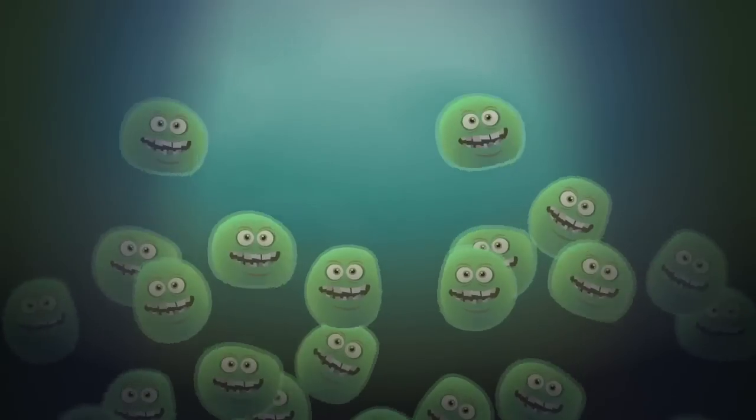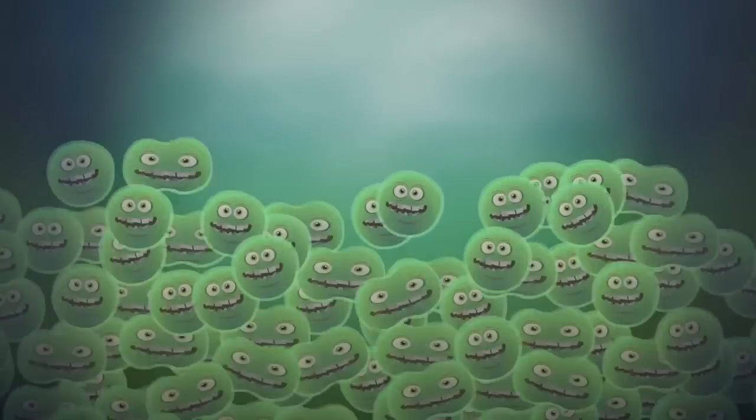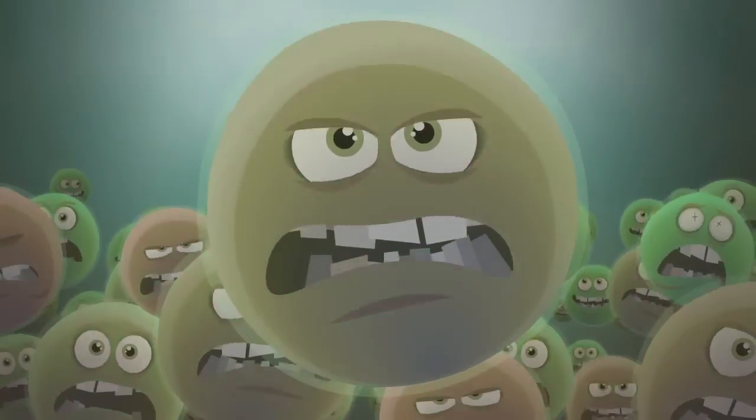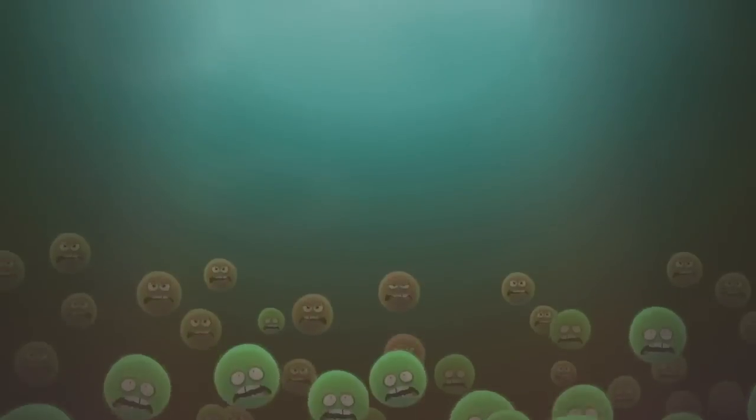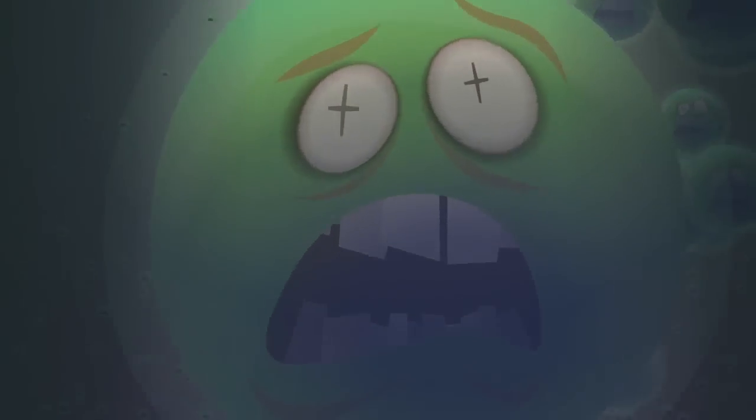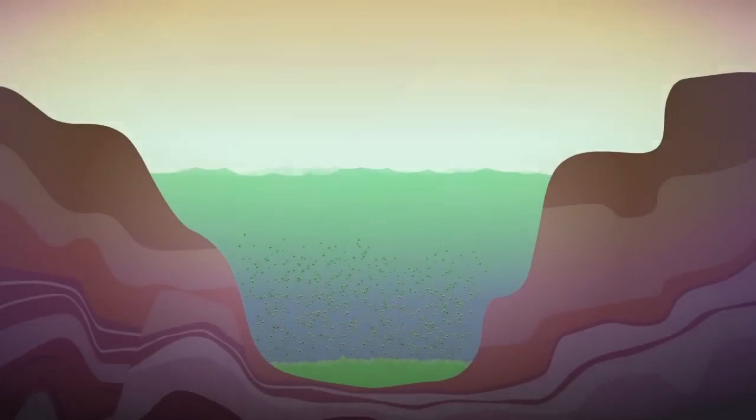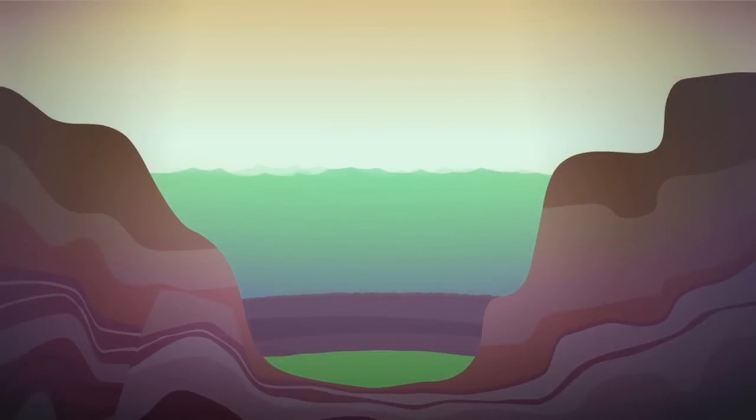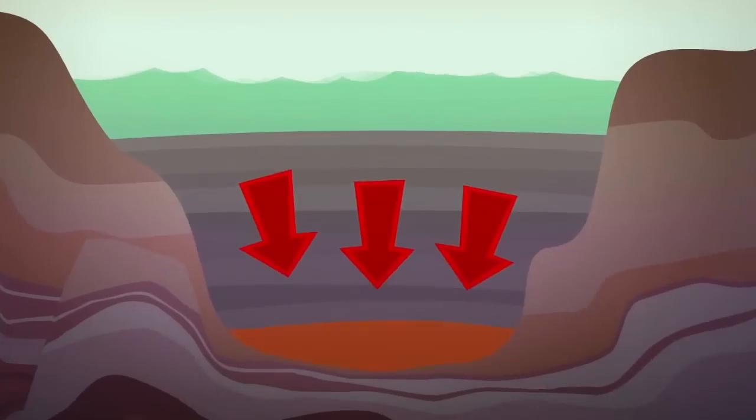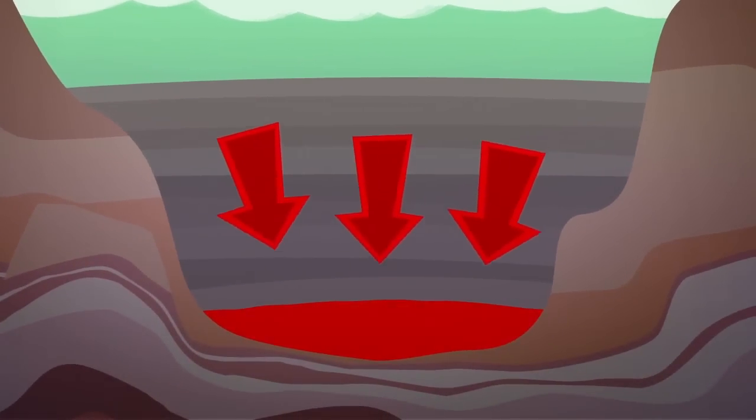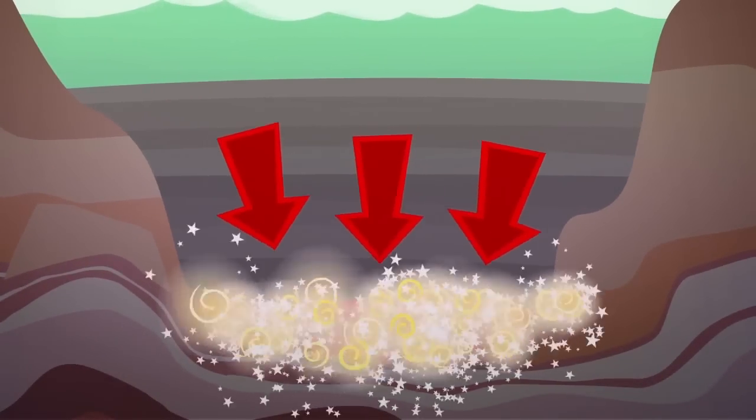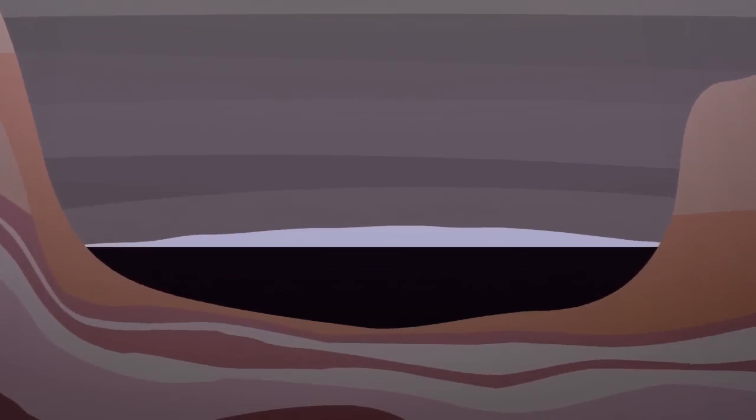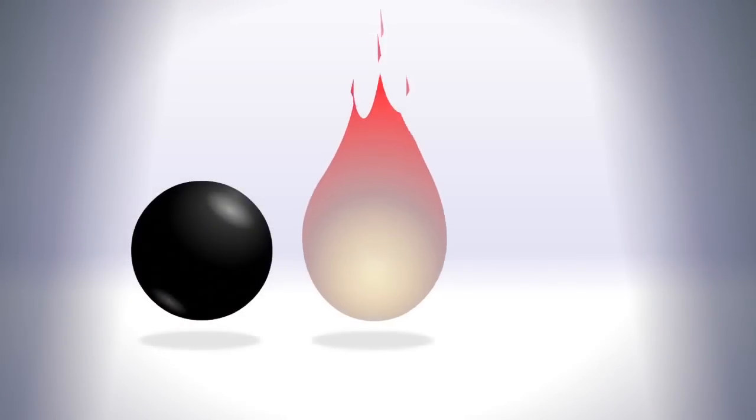Algae thrived in the extreme heat, poisoning the water. They died and fell in their trillions to the bottom of the rifts. Rivers washed sediment into the seas until the organic remains of the algae were buried. As the pressure grew, so did the heat, until a chemical reaction transformed the organics into hydrocarbon fossil fuels, oil and natural gas.